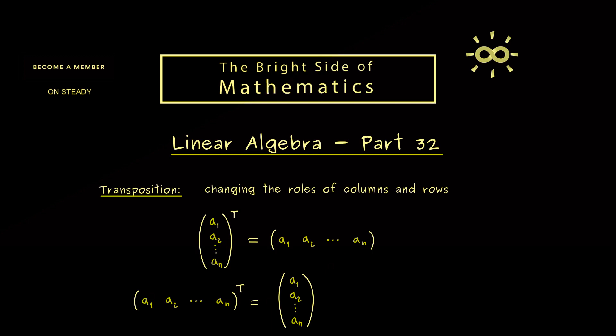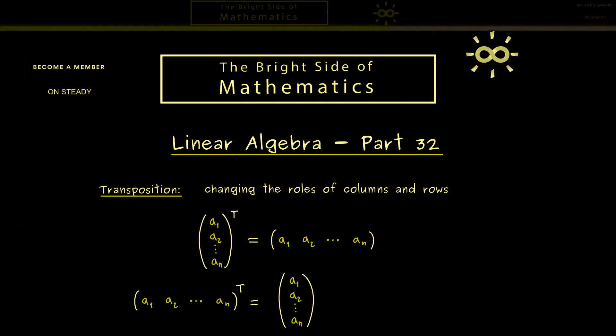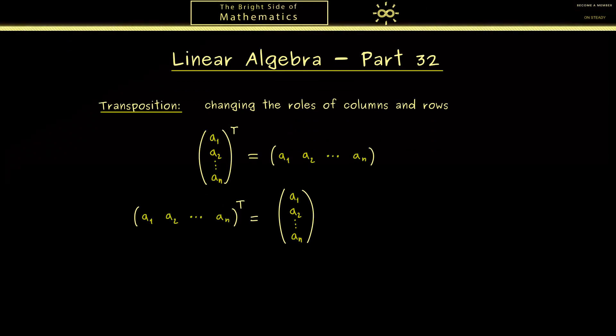However, this also means that applying the transposition two times does not change anything. Hence you can remember for column vector A we have the formula A transpose transpose is equal to A again. So not complicated at all, but something you definitely should remember now.